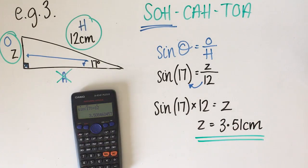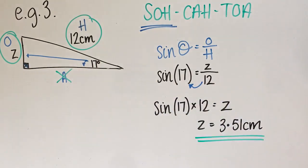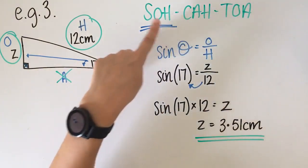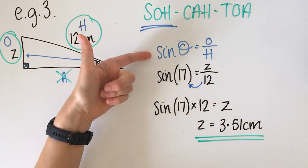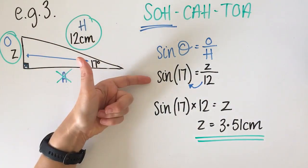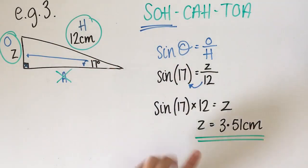Thinking back to our learning intention and success criteria: the success criteria was to label the sides according to the angle — O, A and H — then determine which ratio to use, write down your ratio, substitute the values into the ratio, and then solve to find your answer. If you can do all of those things, then you've met today's success criteria.